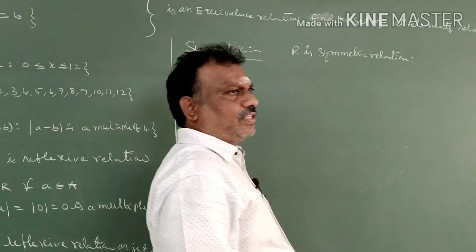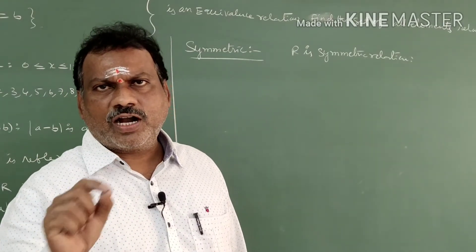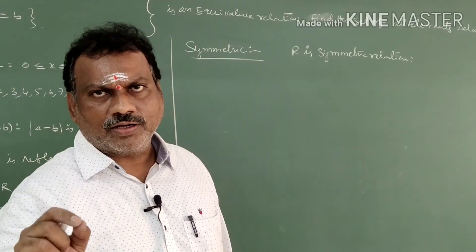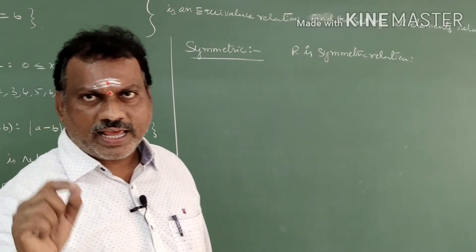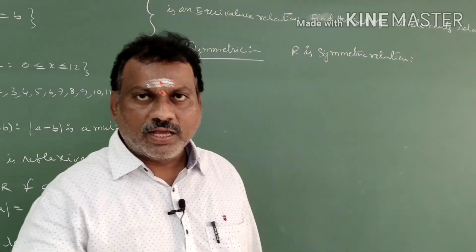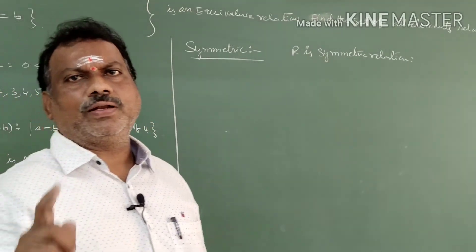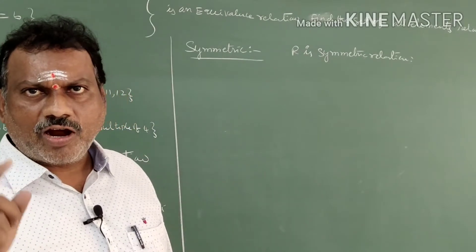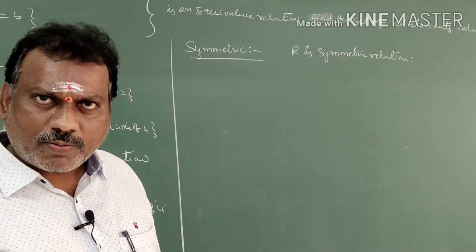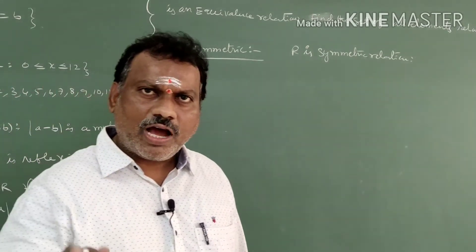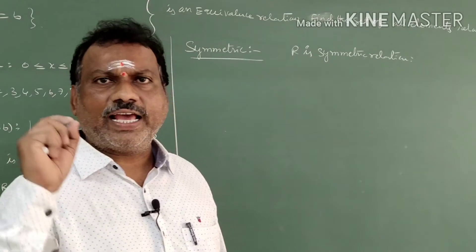Important: when a relation property is satisfied, you should not prove it with an example — use the definition. If it fails, then give an example. If the property is satisfied, prove it using the definition.